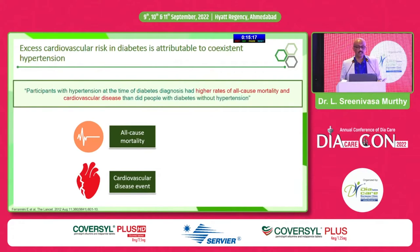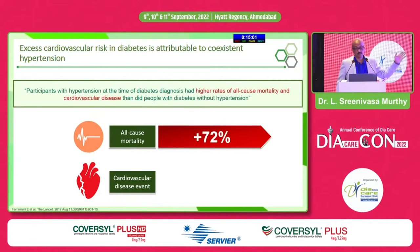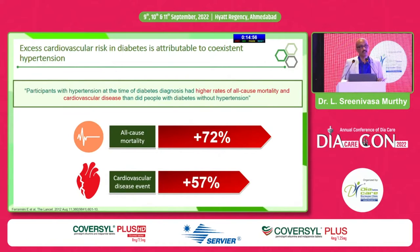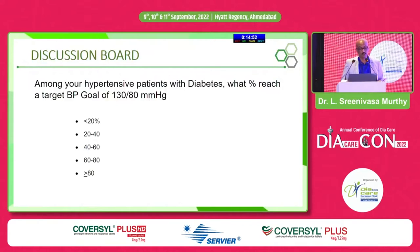The excess cardiovascular risk in diabetes is attributable to co-existent hypertension. Participants with hypertension at the time of diabetes diagnosis had higher rates of all-cause mortality and cardiovascular disease than people with diabetes without hypertension. All-cause mortality increases by +72% when these two conditions combine, and cardiovascular mortality by +57%.